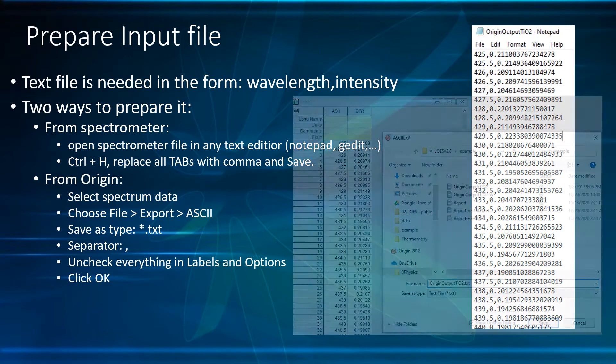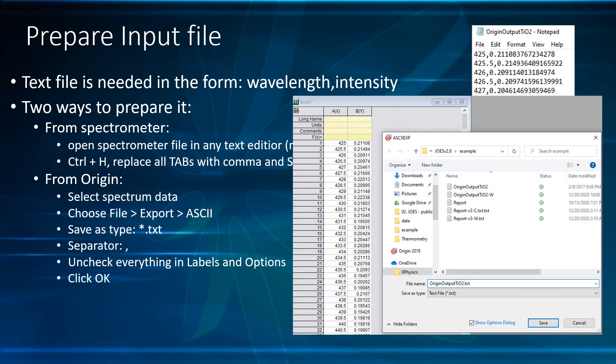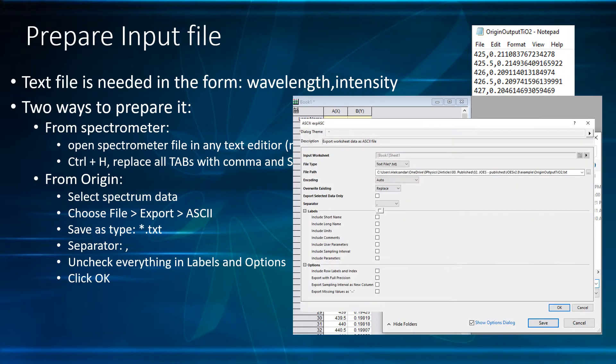From Origin, select Spectrum Data, choose File, Export and ASCII, Save as Text File. Choose comma for the separator and uncheck everything under Labels and Options.